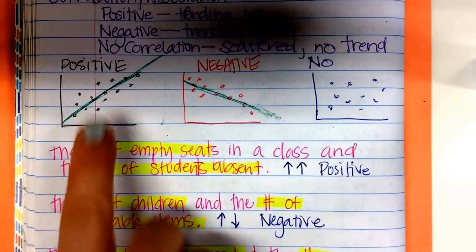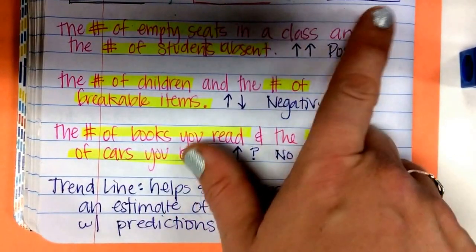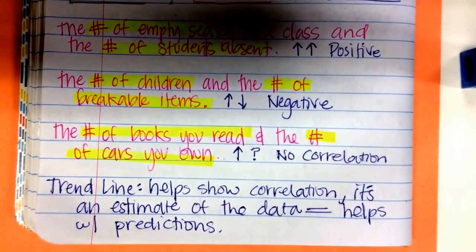All right, so your homework is a lot of positive, negative, no correlation. Reading a story, positive, negative, no correlation. Deal?